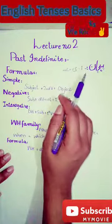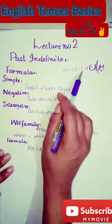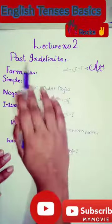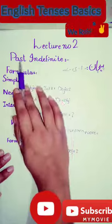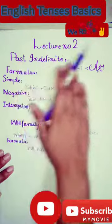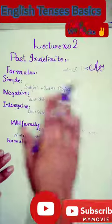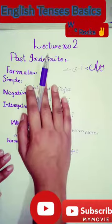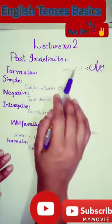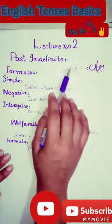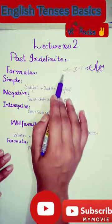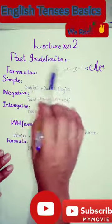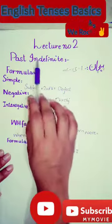If we say 'I have written a letter,' that is a Past Indefinite sentence. The past means something we have already done. This is again Past Indefinite Tense.